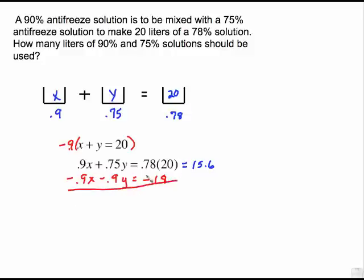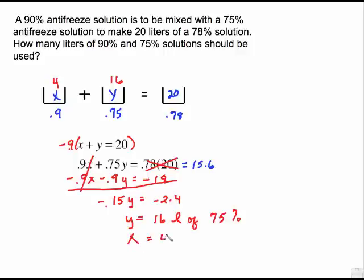I'm going to multiply this top equation by negative 0.9 all the way through, which makes negative 0.9X minus 0.9Y equals negative 18. And then we're going to add these two equations together. Those cancel out. This is negative 0.15Y. Now I'm subtracting negative 18 from 15.6. So on your calculator, 15.6 minus 18 is negative 2.4. Finish solving by dividing by 0.15 and we end up with Y equals 16. If Y is 16 and this plus 16 gives me 20, then obviously X has to be 4. So it is 16 liters of the 75% solution and X is 4 liters of the 90% solution.